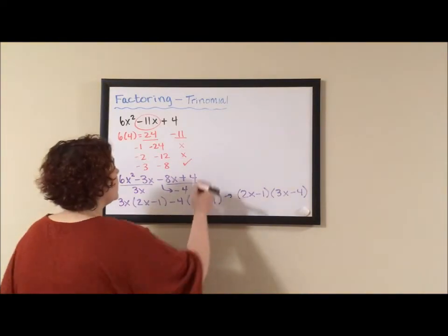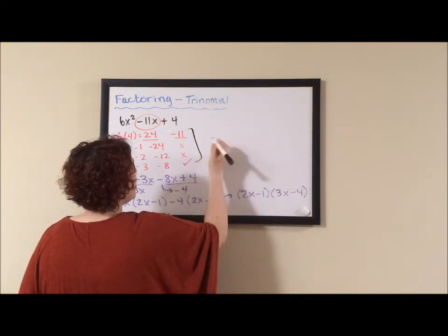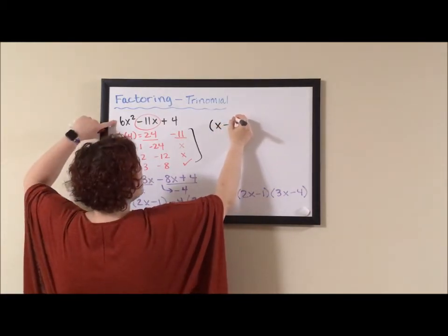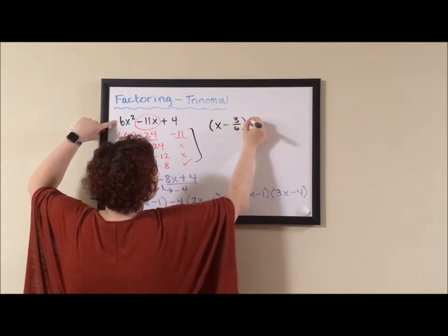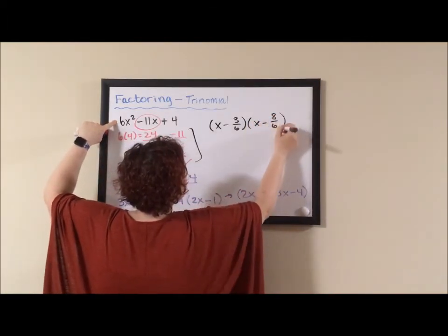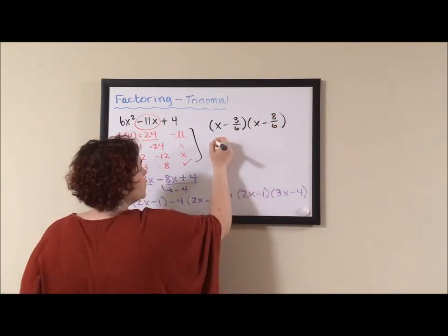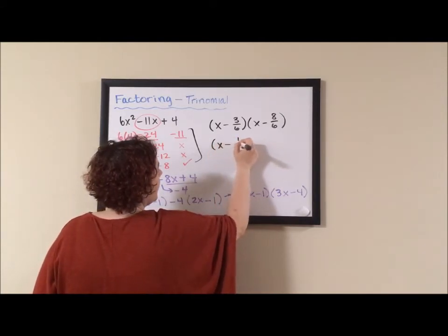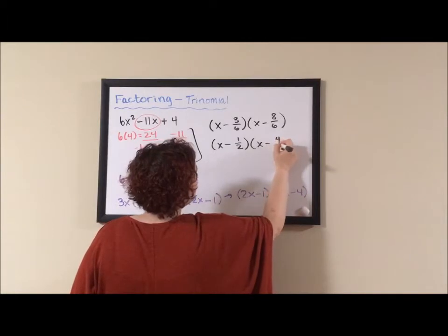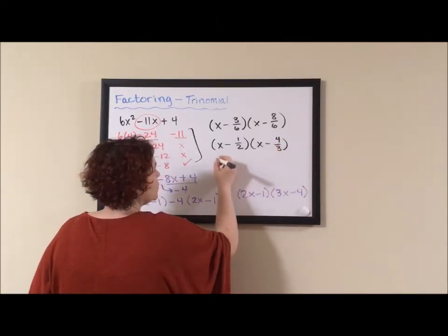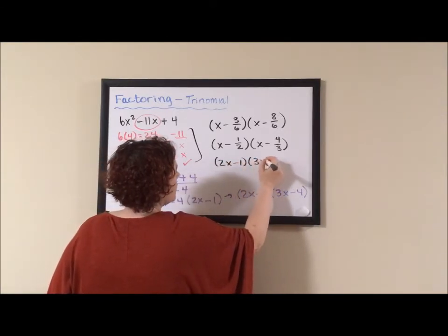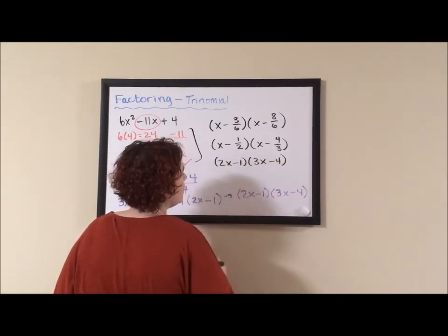So my funky RAR method, what we're going to do is we're going to write x minus, let's see, 8 is 6, 3 over 6, x minus 8 over 6. They're both reducible. So x minus 1 half times x minus 4 thirds. And then I bring my denominators over, 2x minus 1 and 3x minus 4.